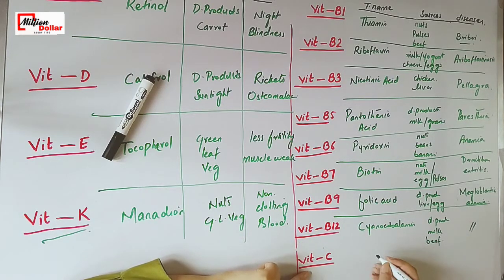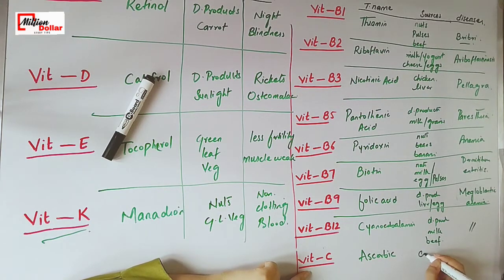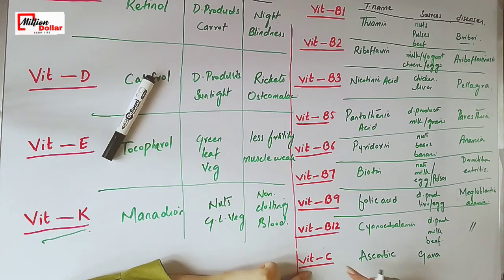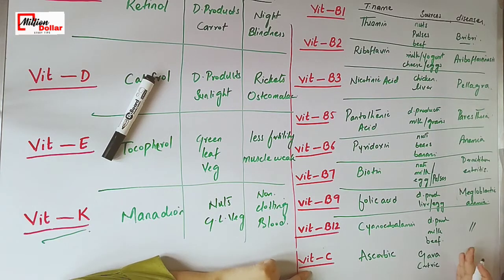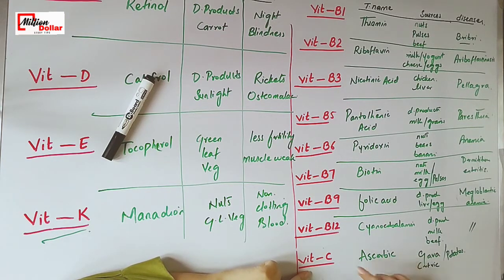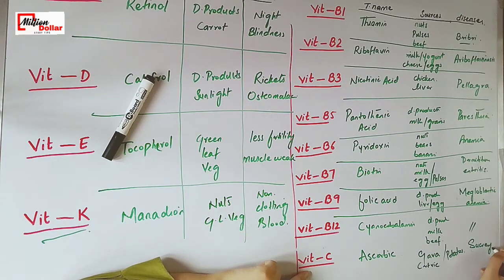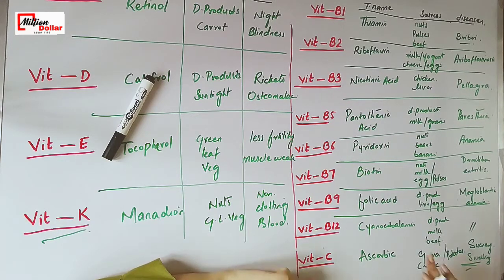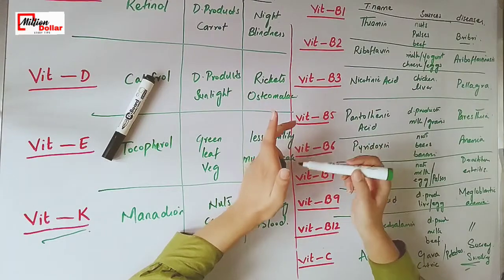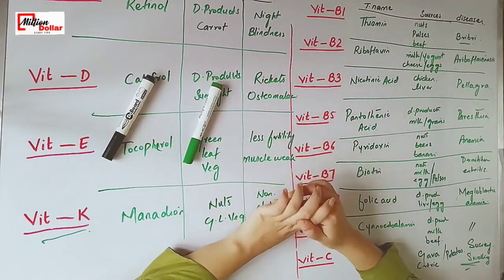The technical name of vitamin C is ascorbic acid. Good sources of vitamin C are guava, which is a rich source, citric fruits including oranges and lemons, and potatoes. The disease caused by the deficiency of vitamin C is scurvy and the swelling of gums. This was all about the vitamins. I hope we'll meet in the next video — thank you so much, Allah Hafiz.